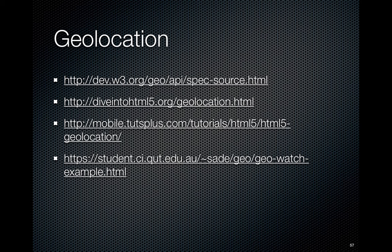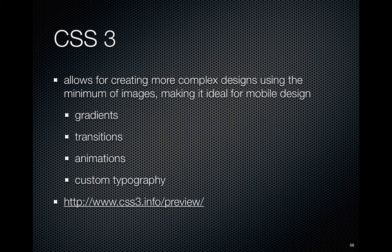We'll go through geolocation in more detail in tutorials. There are links about geolocation APIs and how to implement them — essentially you access geolocation abilities of the device through JavaScript calls. CSS3 accompanies HTML5 and is what we'll look at in tutorials this week. It allows for creating far more complex designs using a minimum of images — things like gradients and rounded corners that you would normally create in Photoshop can now be defined as a set of numbers, which is much more efficient in terms of data storage, benefiting the mobile context.